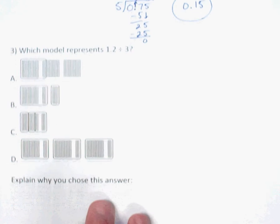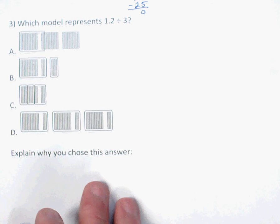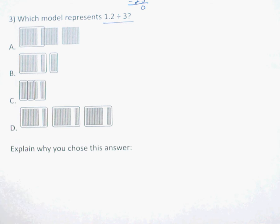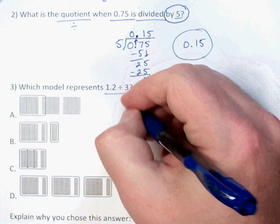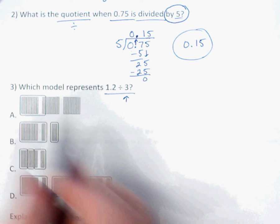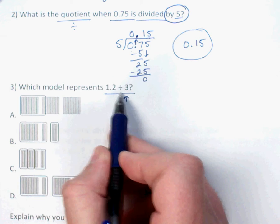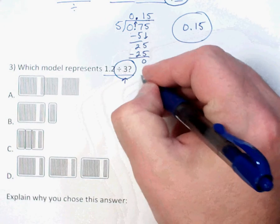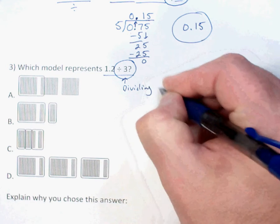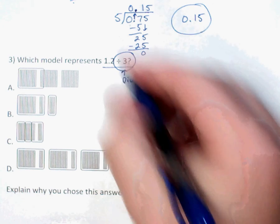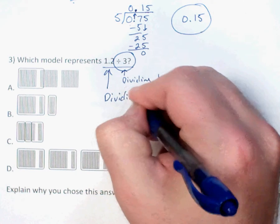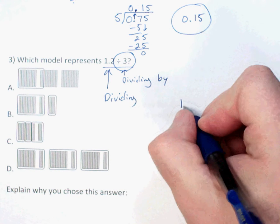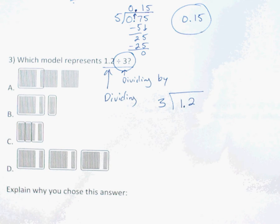Number three deals with a model. Division models are actually pretty easy to work with — there are really just two things to look at. I've got the expression: 1.2 divided by 3. I need to think about what that means. Which model represents one and two tenths divided by three? Three is what I'm dividing by, and one and two tenths is what I'm dividing. I would always do the computation as a check.